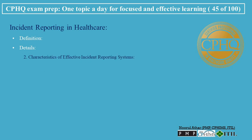Characteristics of effective incident reporting systems include a non-punitive approach that encourages reporting by focusing on learning and improvement rather than assigning blame. Confidentiality ensures reports are kept private to encourage open and honest reporting. The system should be user-friendly to facilitate timely and accurate reporting, and should capture comprehensive data about each incident to enable thorough analysis.